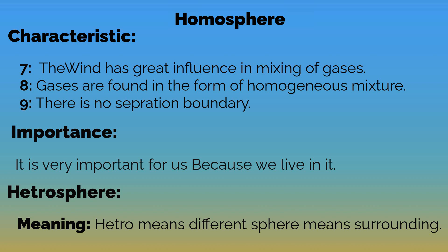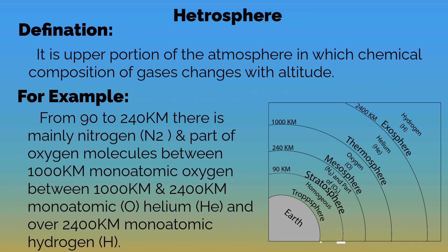Heterosphere — 'hetero' means different or changing, and 'sphere' means surrounding. Definition: It is the upper portion of the atmosphere in which the chemical composition of gases changes with altitude. For example, from 90 to 240 km there are mainly nitrogen and oxygen molecules; between 240 and 1000 km there is monoatomic oxygen; between 1000 and 2400 km monoatomic helium; and above 2400 km monoatomic hydrogen.